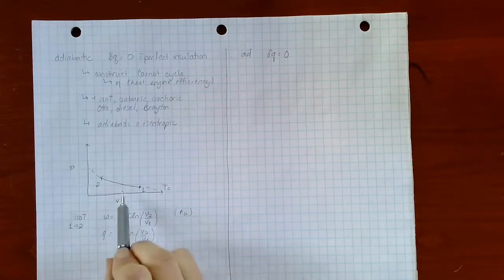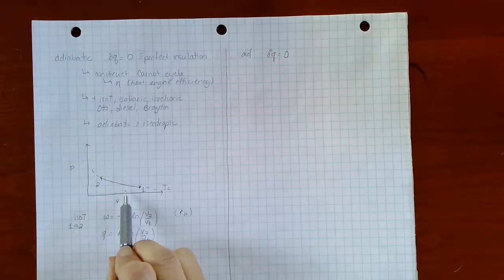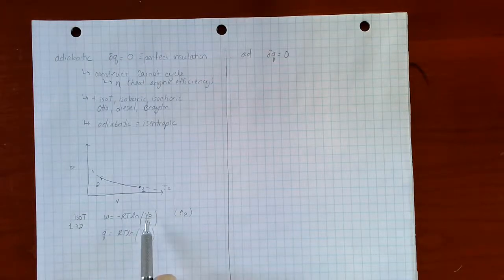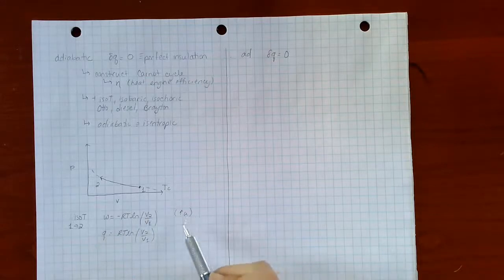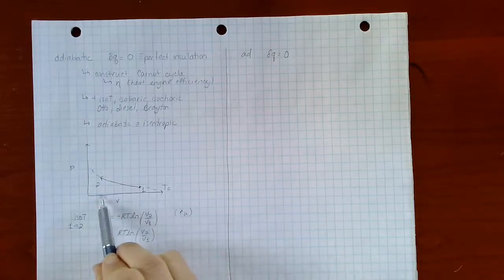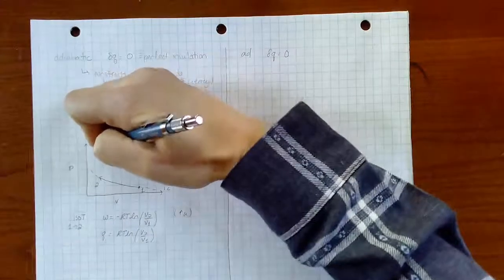So if I draw an adiabatic process on the same PV diagram as the isothermal process, my final temperature for the second state is going to have to be higher. So let's imagine I compress from the same initial volume to the same final volume, I'm going to end up on some hotter isotherm.